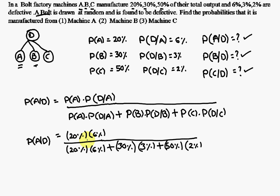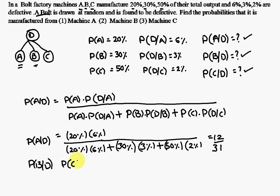If you simplify this, you get probability of A given D occurs equals 12 by 31. Similarly you can find probability of B given D occurs and probability of C given D occurs.